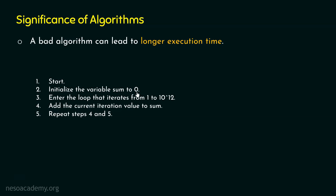Initially sum is 0. When we enter our loop, we get 1 as the current iteration value and it is added to sum, giving us 1. In the second iteration, we get value 2, which is added to the previous sum of 1, giving us 3. In the third iteration, we get 3, which is added to the previous sum of 3, giving us 6.